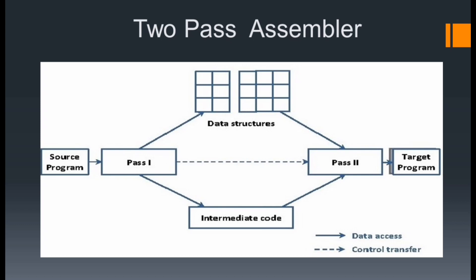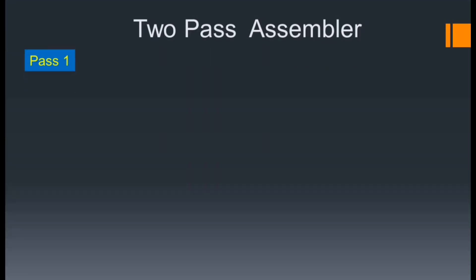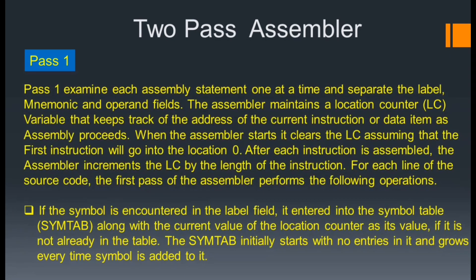Pass 1 examines each assembly statement one at a time and separates the labels, mnemonics, and operand fields. The assembler maintains a location counter variable that keeps track of addresses of the current instruction or data item as assembly proceeds. When the assembler starts, it clears the location counter, assuming that the first instruction will go into location 0. After each instruction is assembled, the assembler increments the location counter by the length of the instruction. If a symbol is encountered in the label field, it is entered into the symbol table along with the current value of the location counter as its value.